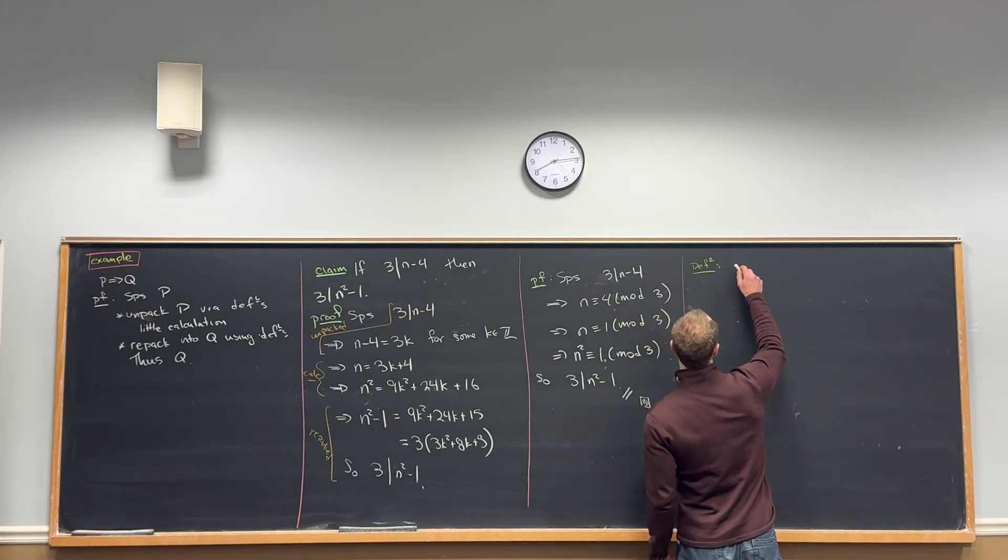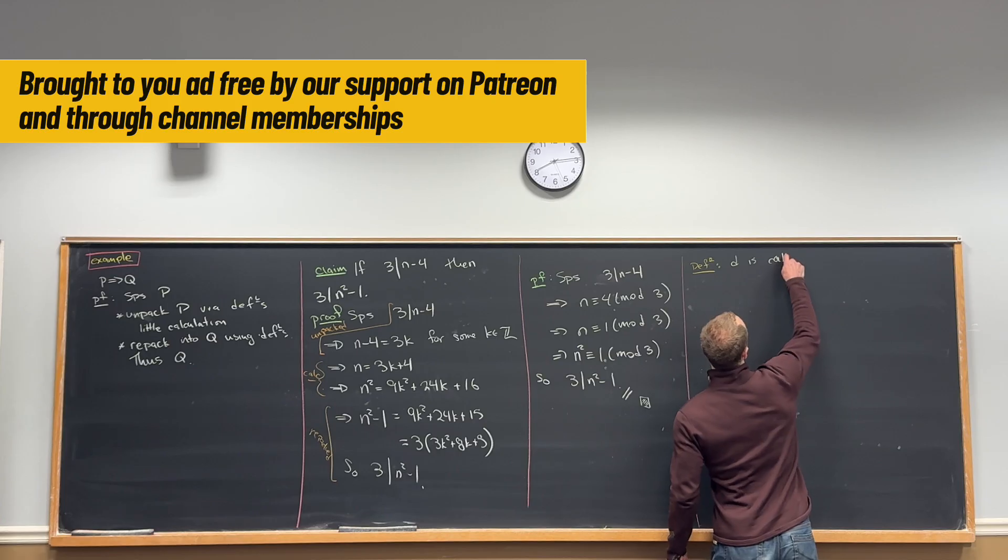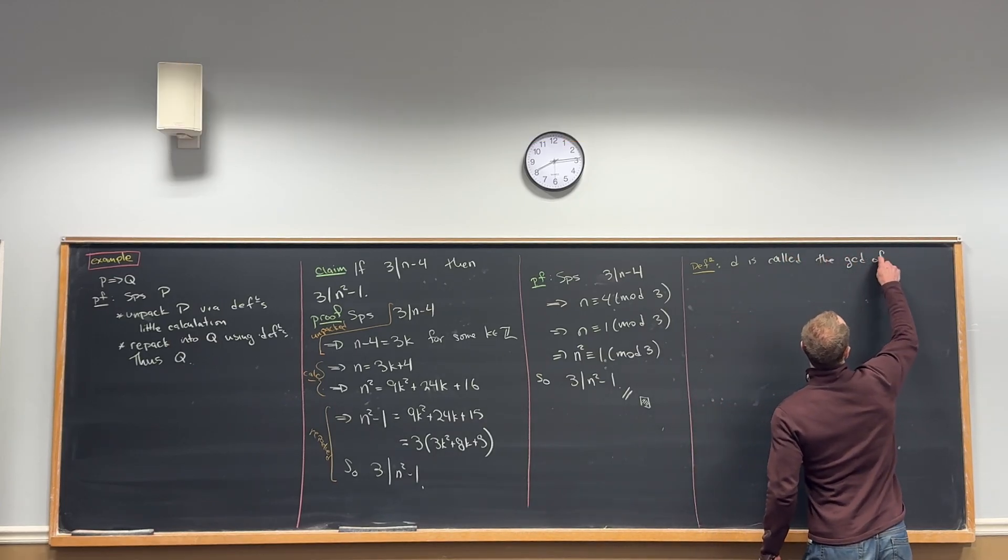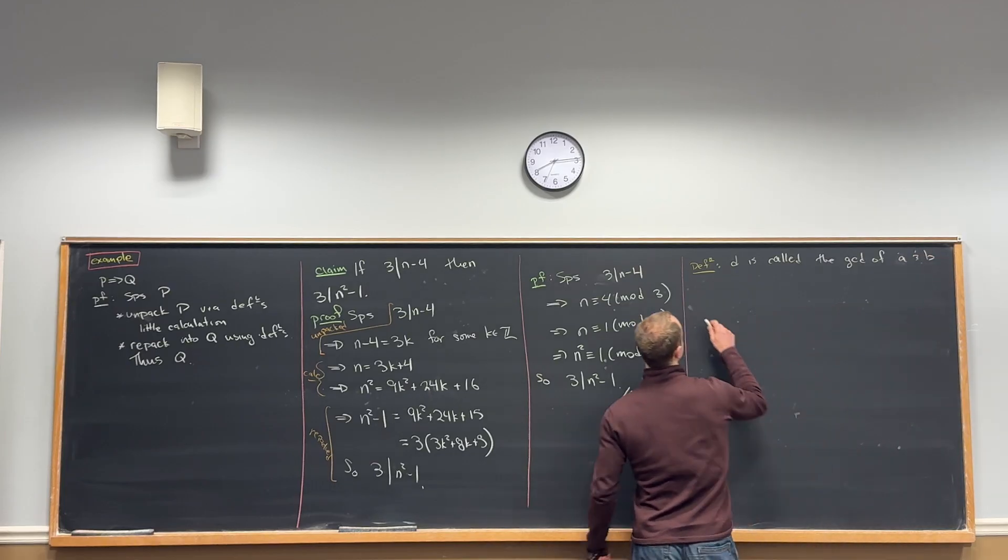Let's recall the definition of the GCD. D is called the GCD of A and B, greatest common divisor.